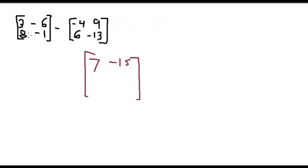Then we have 8 minus 6, which is 2. And then negative 1 minus negative 13, which is 12, because it's a plus. And that's all you have to do. So this minus this matrix is this.